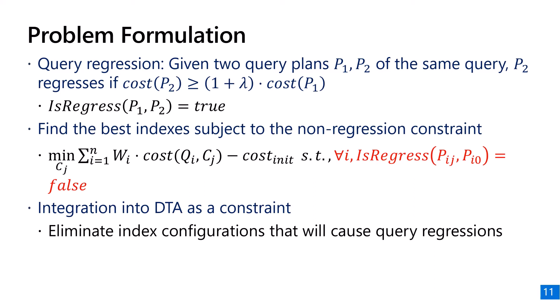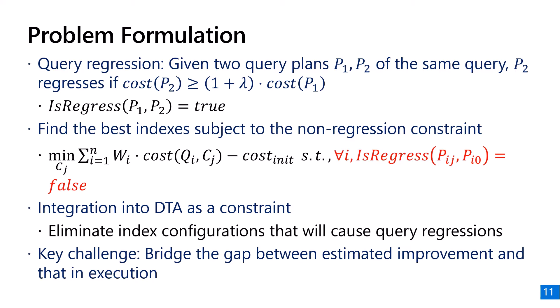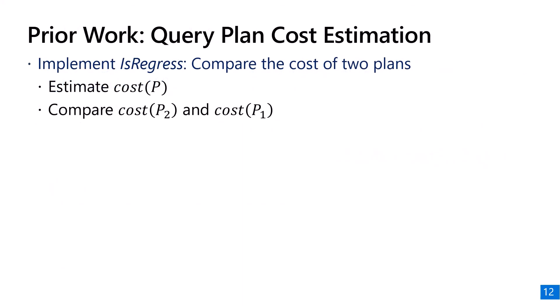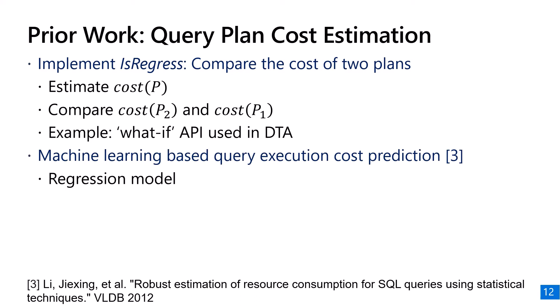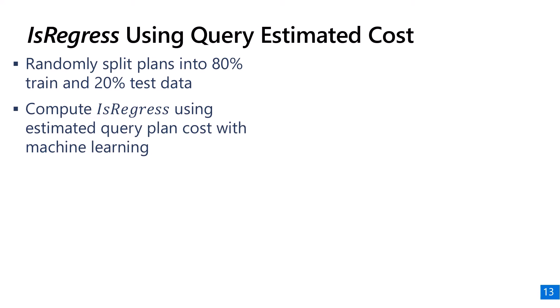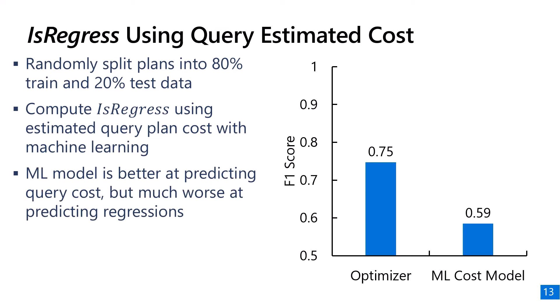As shown earlier, estimating which queries can regress in execution is difficult due to cost estimate errors, so the key challenge is to bridge the gap between improvement in estimation and that in execution. A straightforward way is to compare cost estimates of two plans, which is exactly what the query optimizer does. Prior work has proposed using machine learning to predict query execution cost with a regression model. We collected query plans over 15 workloads and evaluated this technique, but found the model performs surprisingly badly for predicting query regression — in fact, it is even worse than using the optimizer's estimate.